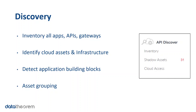We identify existing cloud building blocks such as queues, containers, cloud storage, or cloud databases, where leaks are most likely to happen. Then we will group your assets in order to make any potential vulnerabilities easy to detect. This will also help us identify shadow assets — APIs or building blocks that you are unaware of that live either on the web or in the cloud. We have had several customers surprised by what we can find here.